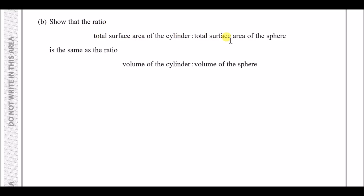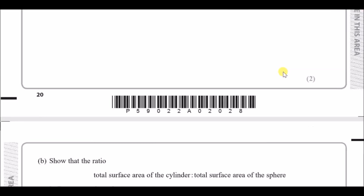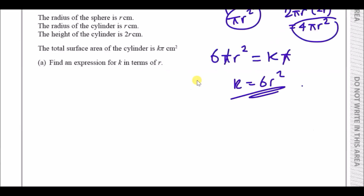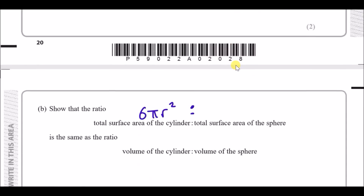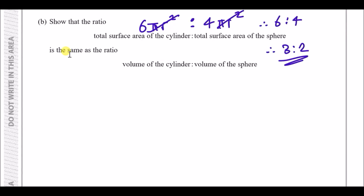For 17b: show that the ratio of the total surface area of the cylinder to the total surface area of the sphere equals the ratio of their volumes. The total surface area of the cylinder is 6πr², and the surface area of a sphere (given in the formula book) is 4πr². Simplifying the ratio 6πr² : 4πr² — cancel πr² from both — gives 6 : 4, which simplifies to 3 : 2.